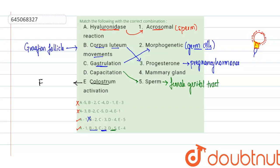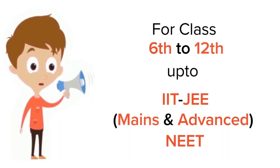And E, that is colostrum, is nothing but the first milk that is ejected from the mammary gland. The activation of this colostrum takes place in the mammary gland, and E is matched to 4. We can see that only the last option has all these matches correct. So this is the right option for this match the following.